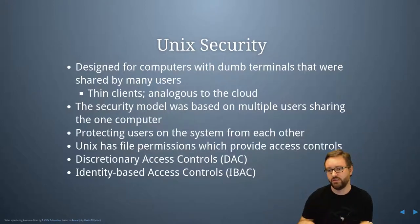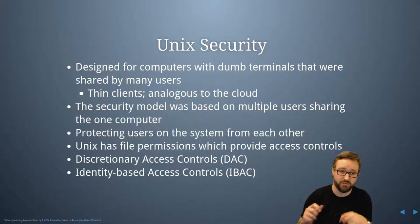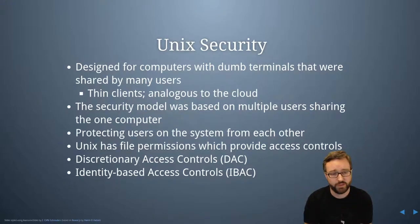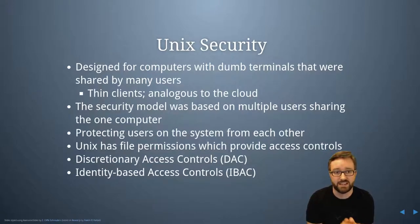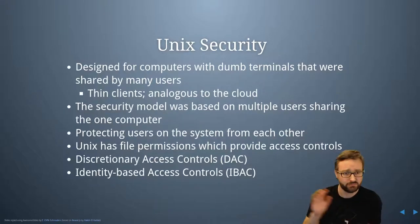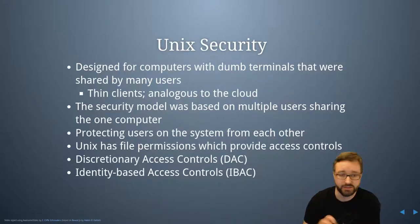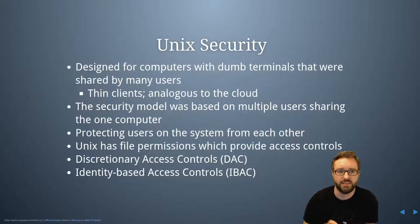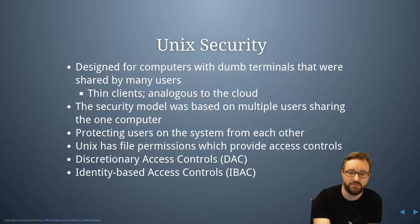Each user on the system basically has their own files and they get to choose what they do with them. That's referred to as identity-based access controls, which is a kind of discretionary access control — we'll talk about that in another video on access control models. Basically, the idea is you've got file permissions that provide the access control, with permissions set on different files.